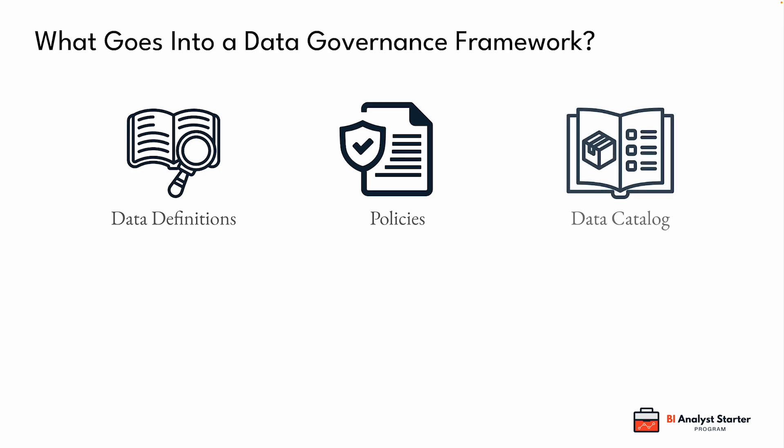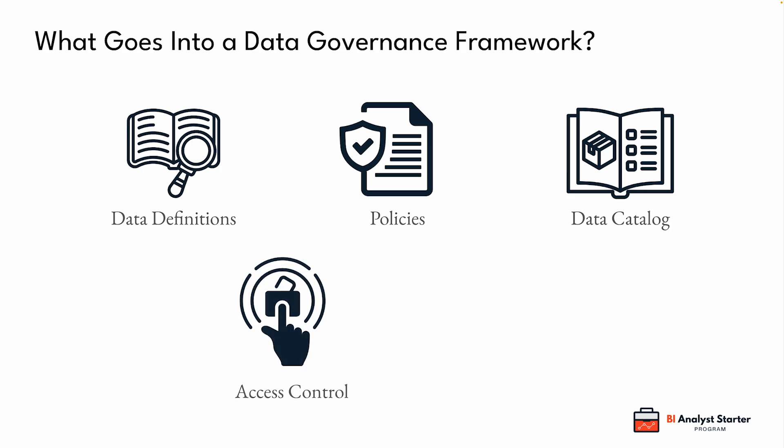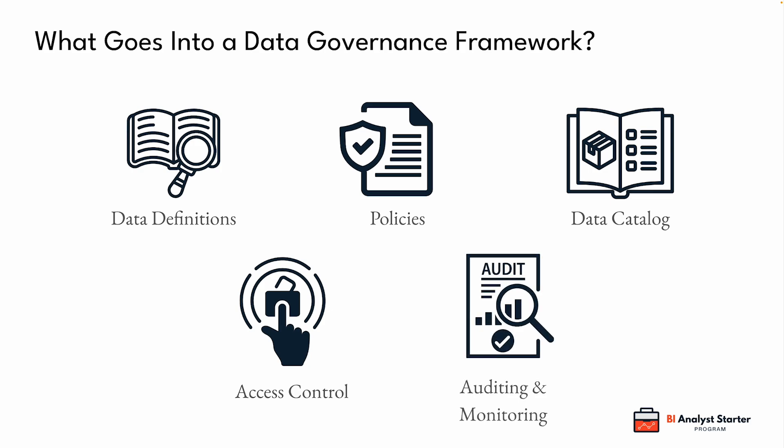Then there's the data catalogue — this is like a map of your data landscape. It helps people know what data exists, where it lives, what it's used for, and who to talk to if they have questions. Access control is another big one. Not everyone should have access to everything. Governance helps define roles and permissions so sensitive or business-critical data is protected. And lastly, auditing and monitoring — keeping logs of changes, spotting anomalies, and being able to trace back who did what. It's not about policing people; it's about being able to investigate issues when they come up. All of these elements together create a system that ensures data can be trusted, reused, and scaled.